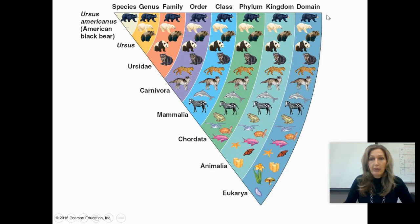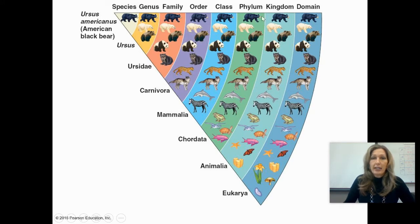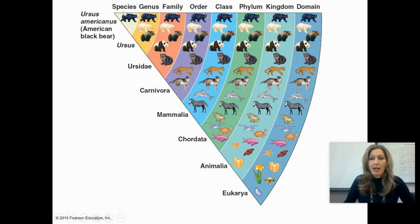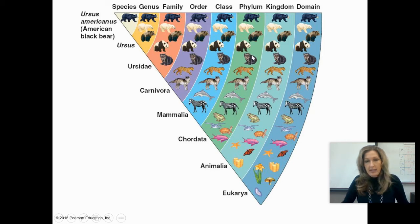Mnemonics can help in remembering the classification hierarchy. I still remember the one I learned in 1981: 'King Philip could only find green shoes.' Now it's been modified to 'Dumb King Philip could only find green shoes.' Another mnemonic students use is 'Dumb kids playing chess on freeways get squished.' Whatever works — just remember: Domain, Kingdom, Phylum, Class, Order, Family, Genus, Species, from most inclusive to most exclusive.